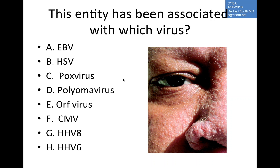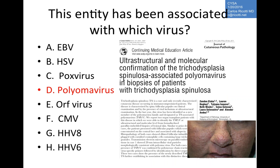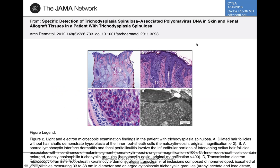The virus associated with cyclosporine-induced lichen spinulosa is a polyomavirus, first described around 2006-2007. Electron microscopy has detected polyomavirus within the inner root sheath. This finding should be in your differential diagnosis for leonine facies. A subsequent case published in the Archives further confirmed this association.